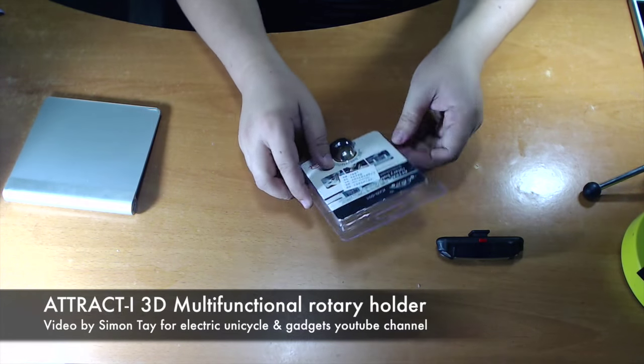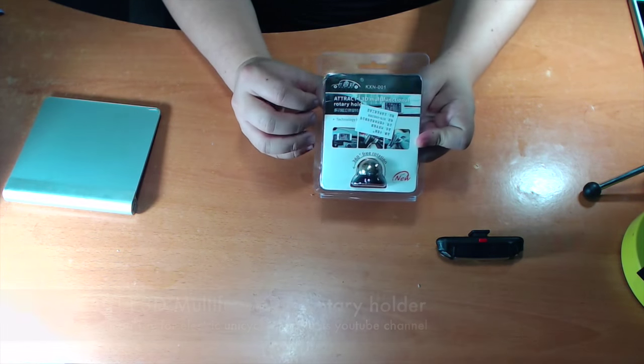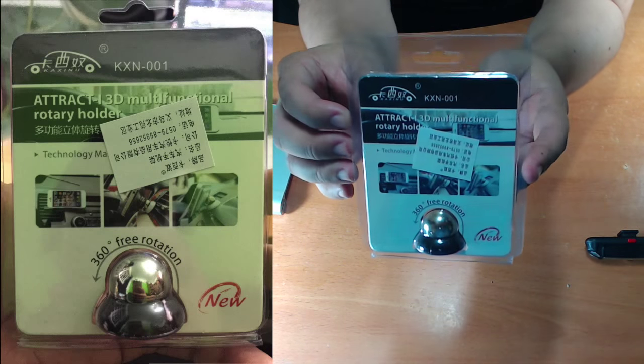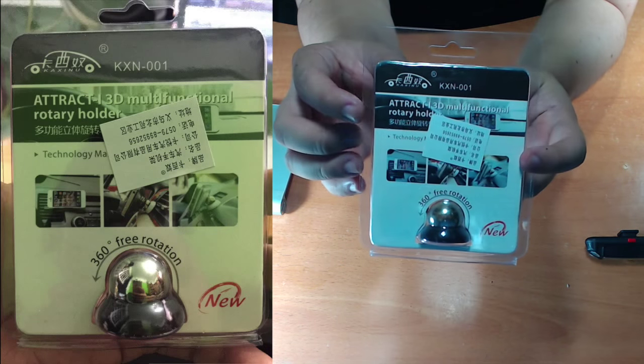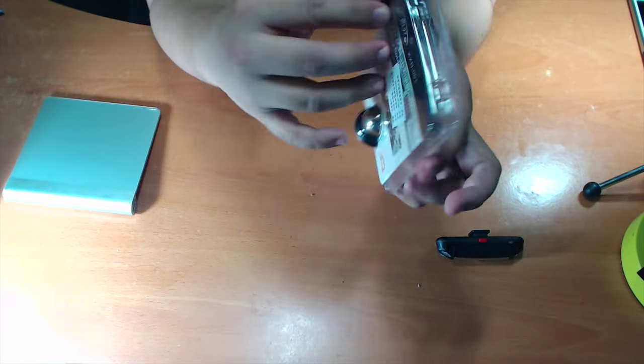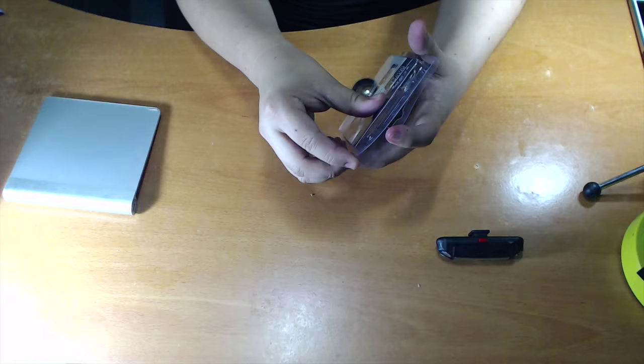Hey guys, welcome to another electric unicycle and gadget review. Today I'm going to do a basic unboxing and showcase the usage of this Attract I 3D Multifunctional Rotary Holder. Basically what it is is a magnetic holder for your smartphone devices or any other devices.